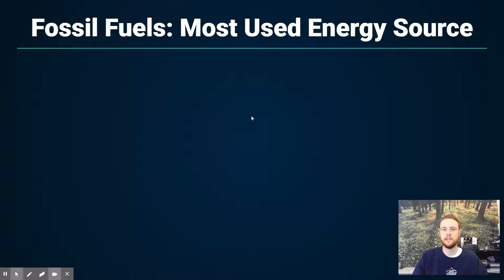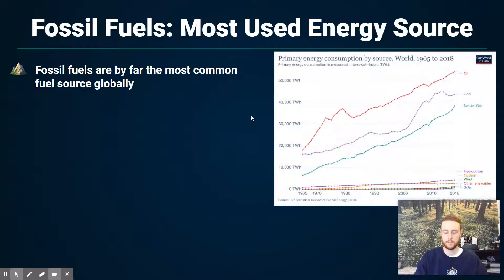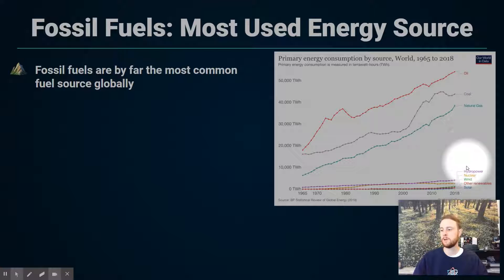The next important trend is that fossil fuels are the dominant energy source globally by a long shot. Looking at a graph of total global energy source consumption, we see that the combination of oil, coal, and natural gas — collectively referred to as fossil fuels — far outpaces any other form of energy use on a global scale.